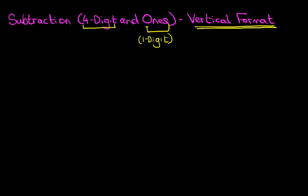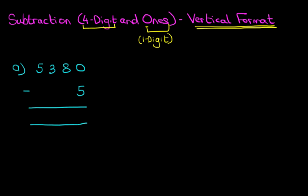Let's begin with our first example. What is 5,380 minus 5? Let's put a nice big equal sign here. So 5,380 minus 5. Now I'm going to label the columns — you don't have to, but it'll help to explain what we're doing. We've got units, tens, hundreds, and thousands.